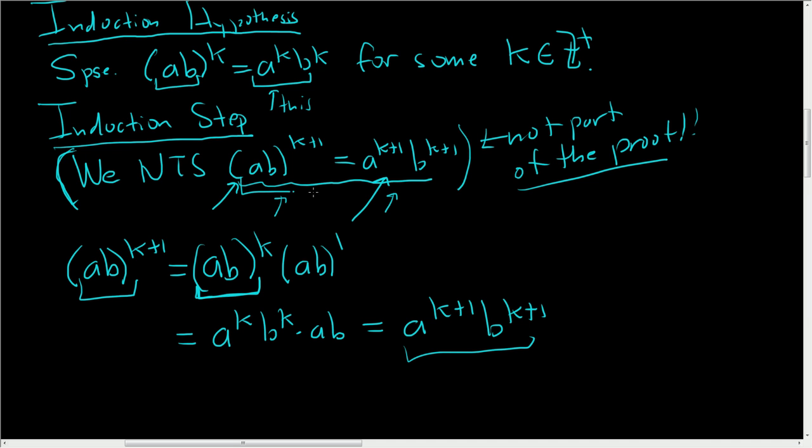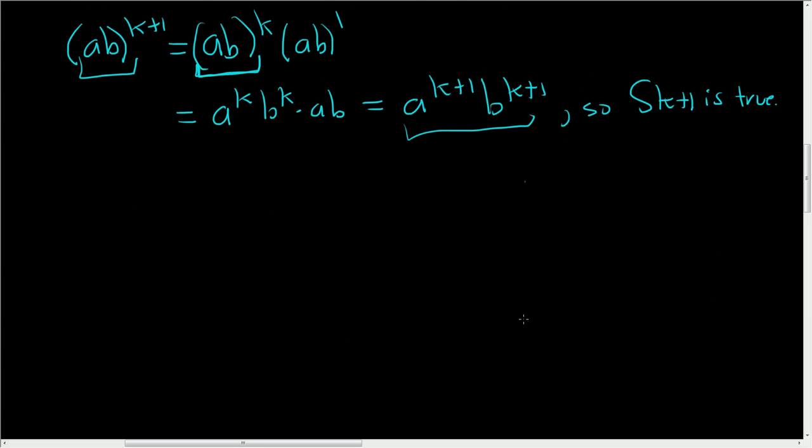So we started with this, and we showed that it's equal to this. That was precisely what we needed to show. So S sub k plus 1 is true. And when you finish, you just write something down. Therefore, by PMI, S sub n is true for all positive integers. And that's it. Pretty easy problem. Thank you.